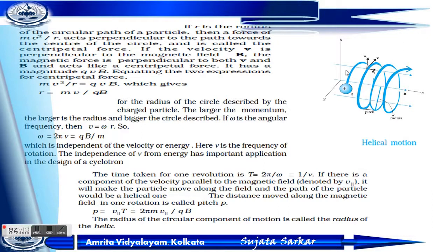The magnitude of the centripetal force is QVB. Equating the two forces: mv²/R = QVB. So R equals mv/QB. The larger the momentum, the larger the radius, and the bigger the circle described.